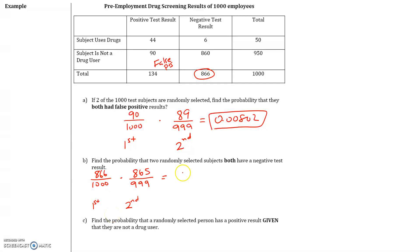If you multiply these together, this equals 0.750. So if you take out two people at random, there's a 0.75 probability that they both got a negative test result. This probability is fairly high because you have a lot of people who got a negative test result.